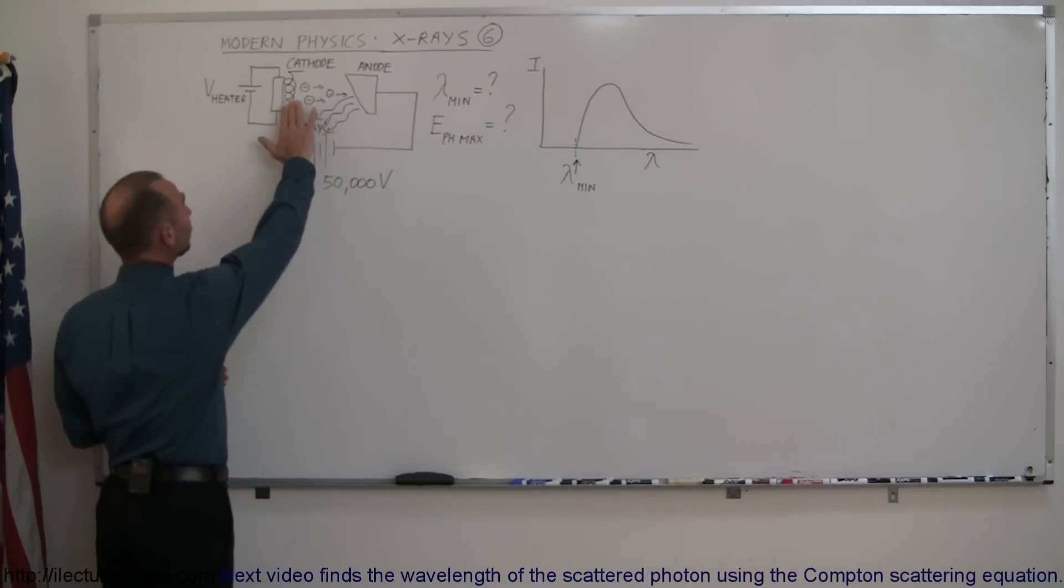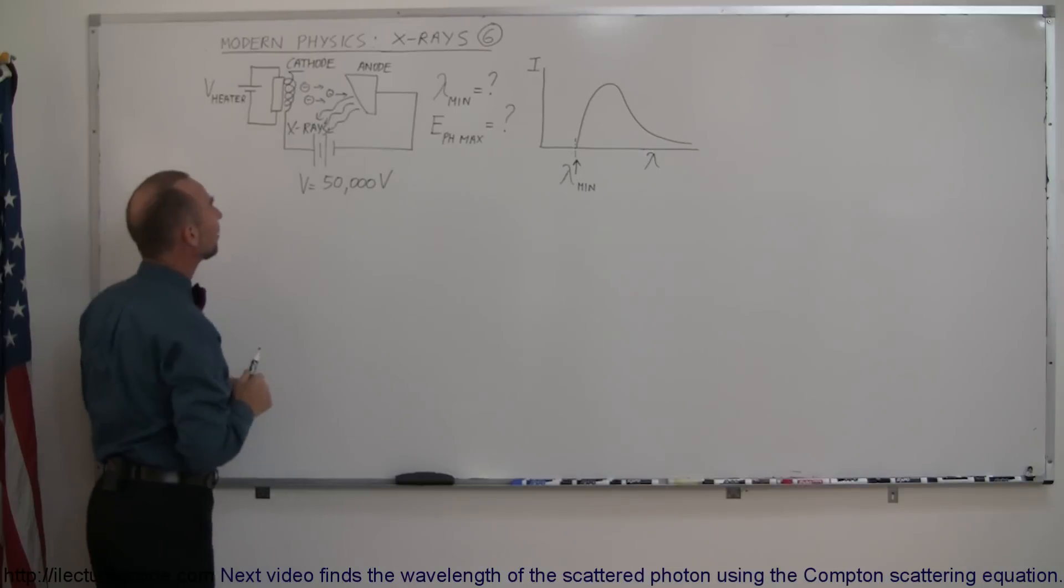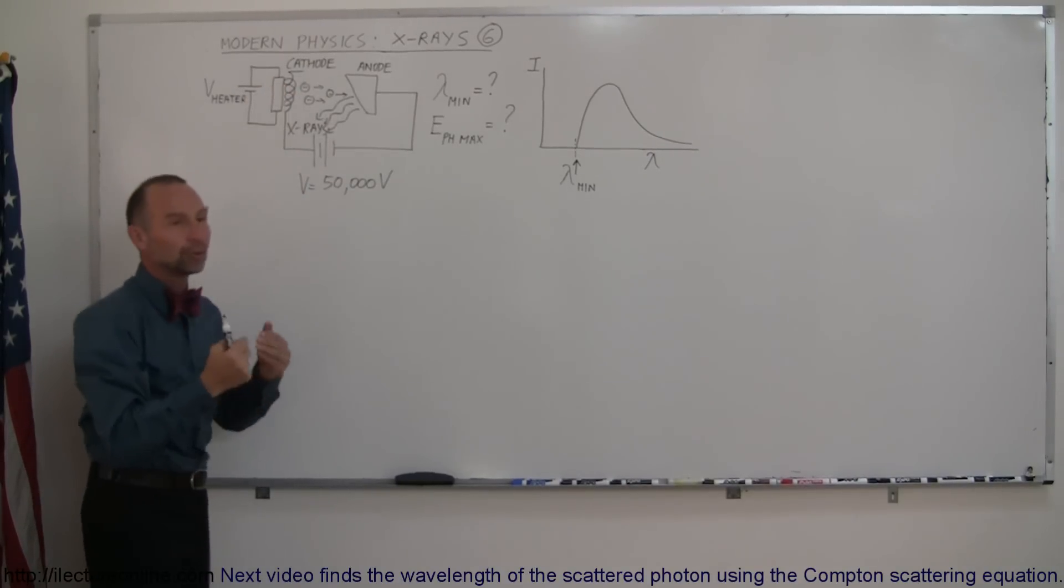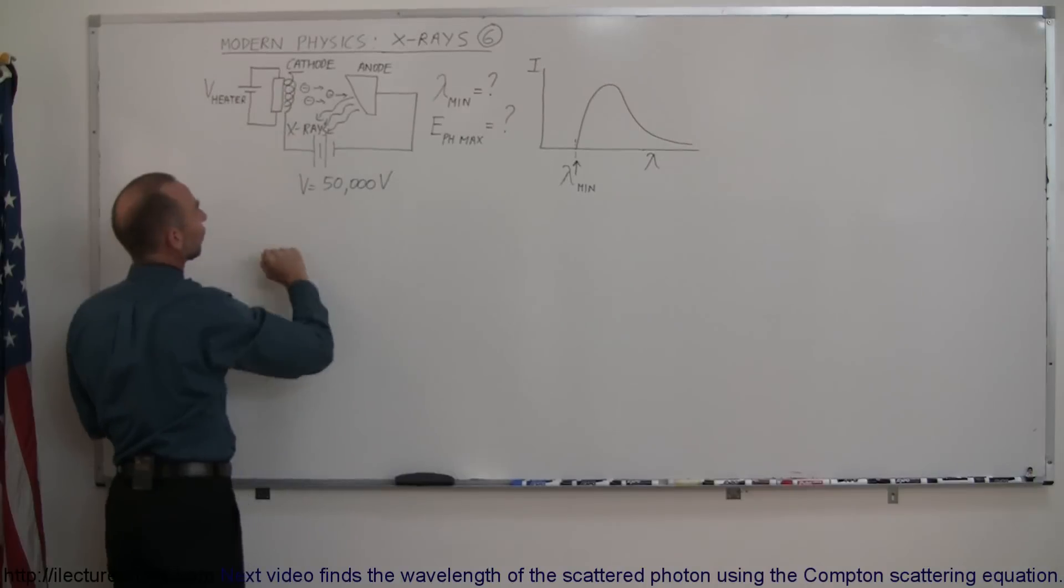So the way that works is we have a cathode that will release electrons if you place a heater right next to it to heat it up enough for the electron cloud to exist right above the cathode.